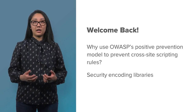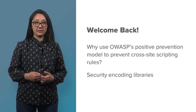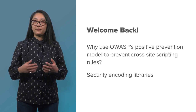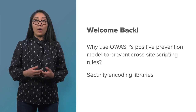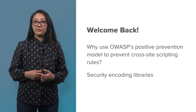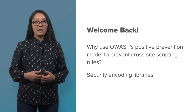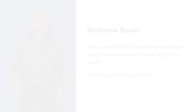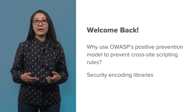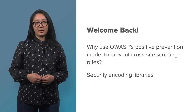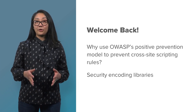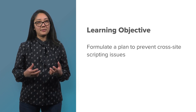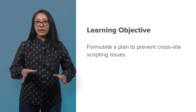Welcome back! In this lesson, I'm going to talk about how to prevent cross-site scripting vulnerabilities. These prescriptions are given out by OWASP, and they're tried and tested, so these are really good rules to follow. We're going to talk about why we would use OWASP's positive prevention model, the use of security encoding libraries, and the various cross-site scripting prevention rules. Remember, cross-site scripting attacks are always executed in the browser. This lesson is split into two parts, and after you view both, you will be able to formulate a plan to prevent cross-site scripting issues within your own organization.